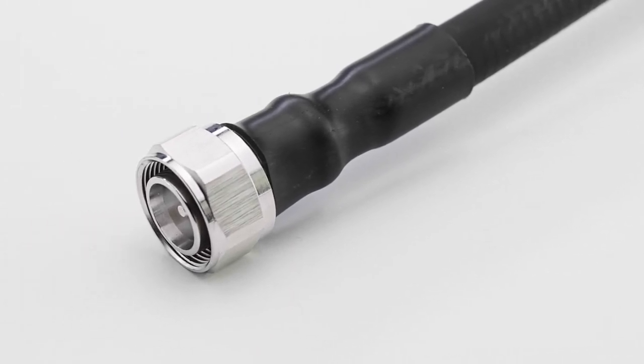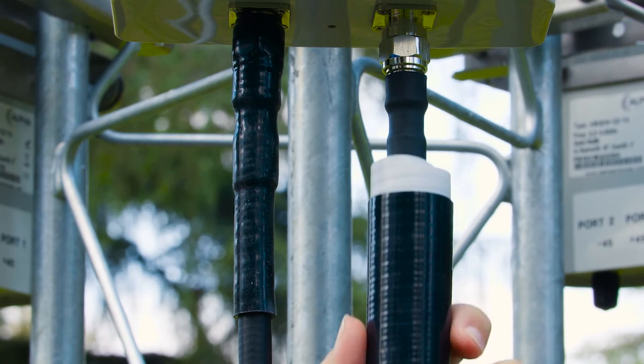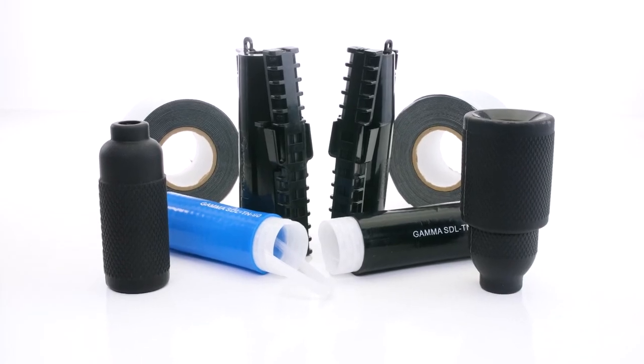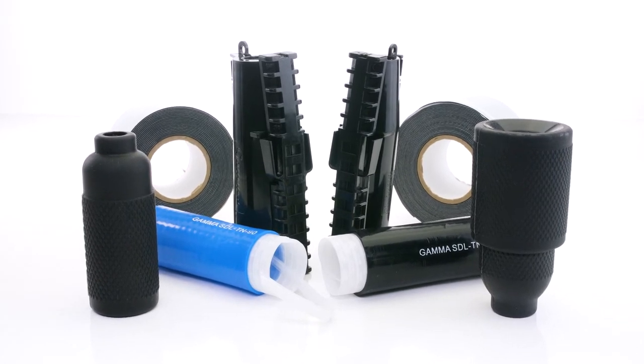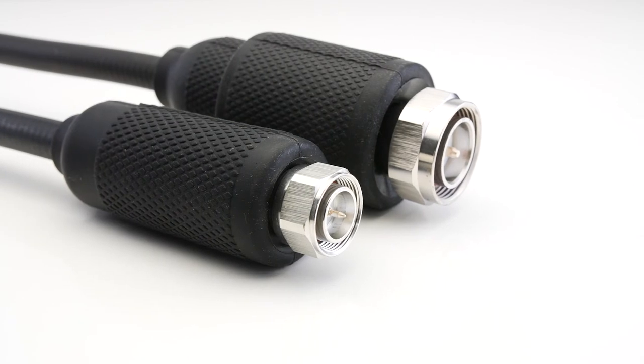While heat shrink acts as a first layer of cable protection, additional layers will be necessary during installation. Gamma Electronics offers the best cable protection available to the telecommunications and fixed wireless industries that can be packaged with cables to provide additional value.